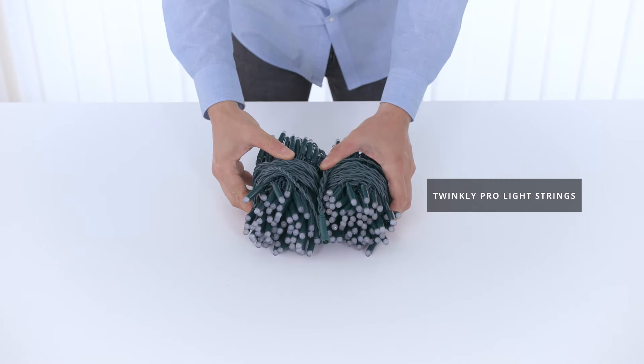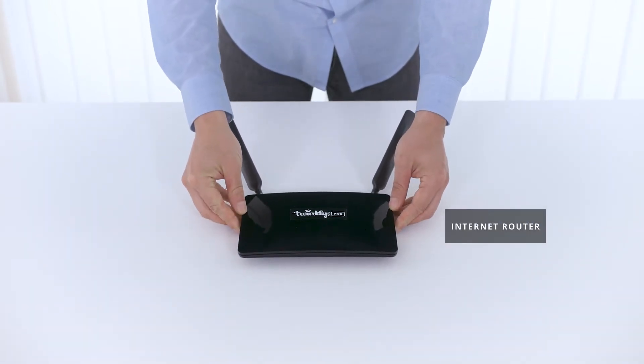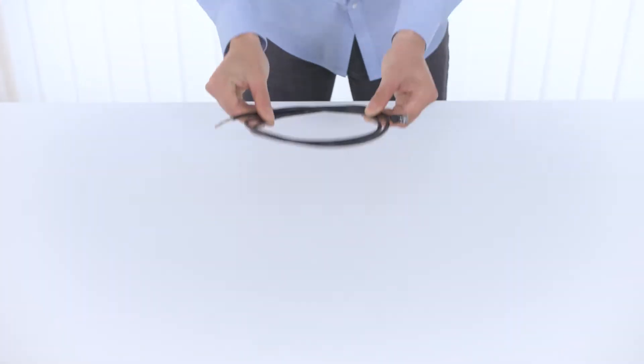Other items that you will need are Twinkly Pro Lite strings, a wireless router for communication to your controller, and an ethernet cable.